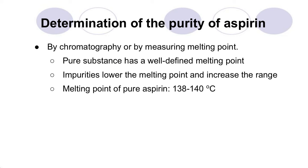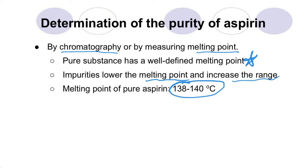To determine the purity of aspirin, we could do it by chromatography or by measuring the melting point. The melting point is really easy because a pure substance is going to have a well-defined melting point, whereas impurities will lower the melting point and increase the range. So if we had pure aspirin we would expect the melting point to be between 138 and 140 degrees Celsius. If there were impurities it would be lower, with a much broader range — maybe 130 to 135 degrees or so.